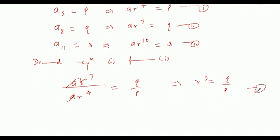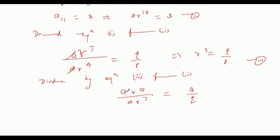Dividing the eleventh term by the eighth term: A R to the power 10 by A R to the power 7 equals S by Q. This gives R cubed equals S by Q.